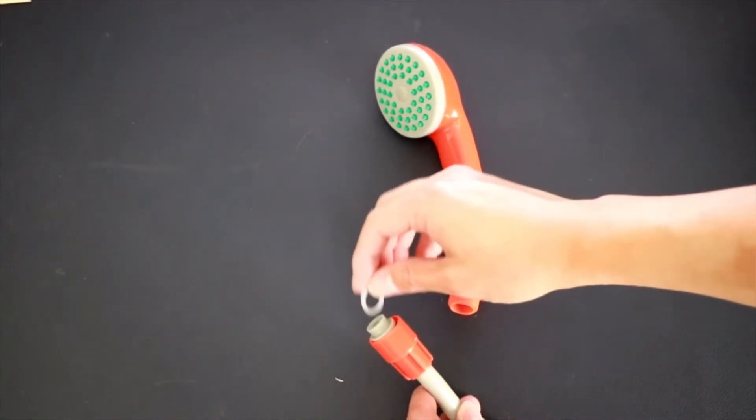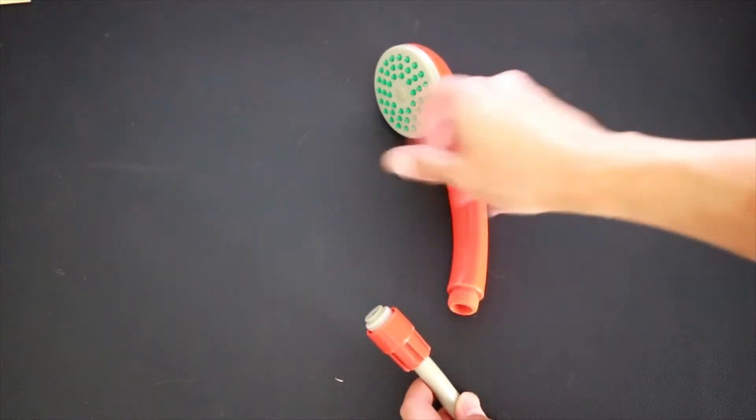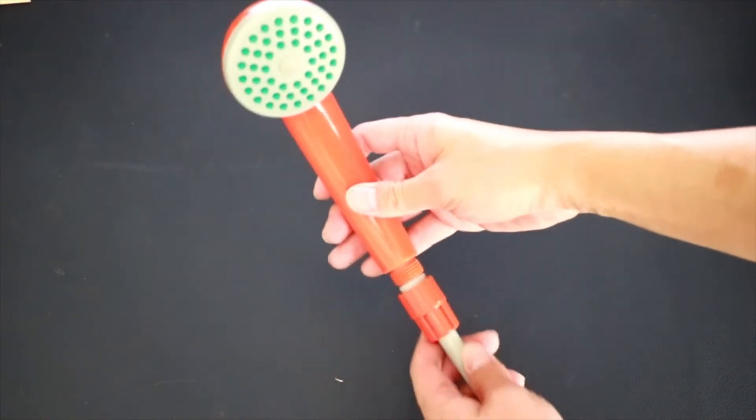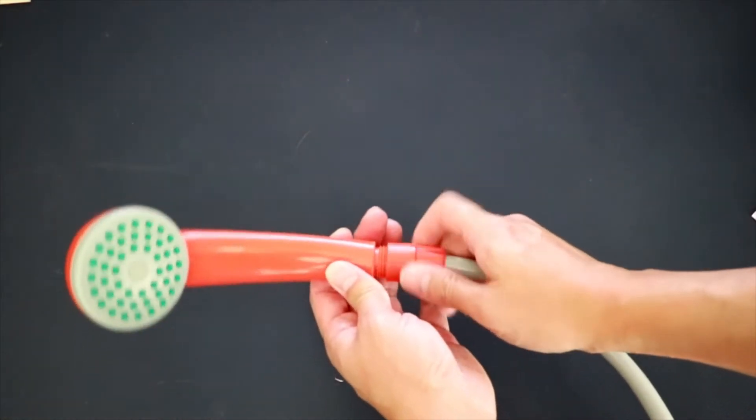Find this rubber ring which comes in the package. Put it on the other end of the hose, then connect this end to the shower head. Screw it in, make it tight.